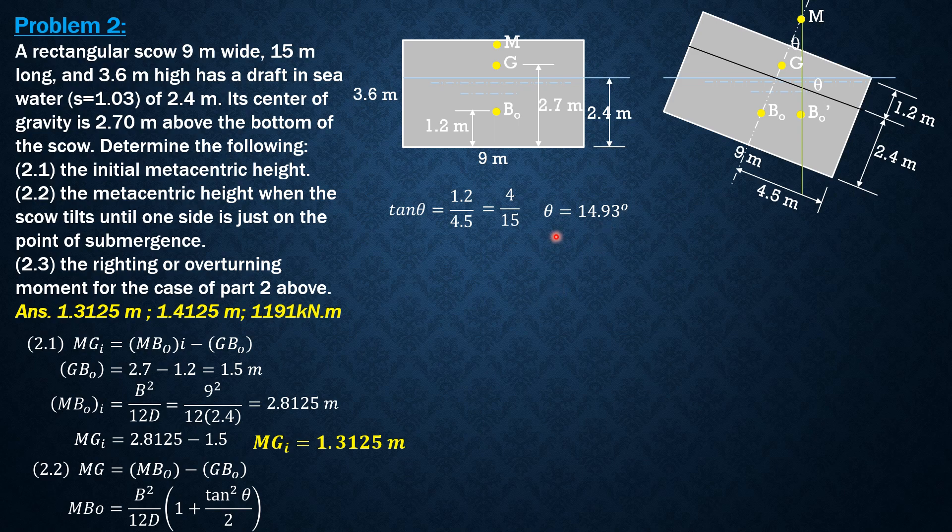Having found tan θ, let's substitute it. MB₀ is 9²/(12×2.4) × (1 + (4/15)²/2). So MB₀ is 2.9125 meters. As expected, it increases a little by a slight amount.